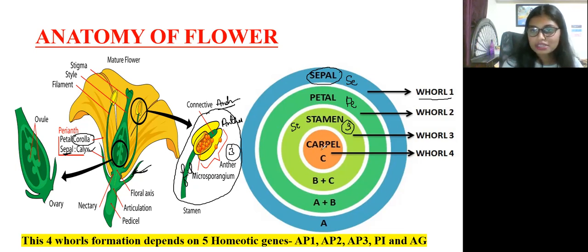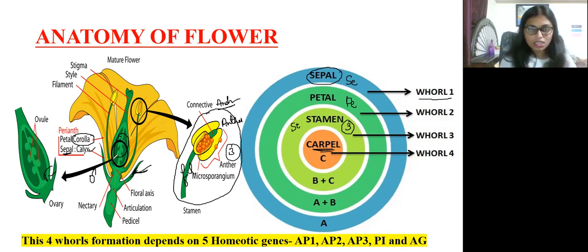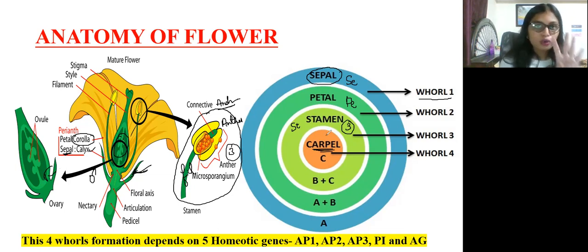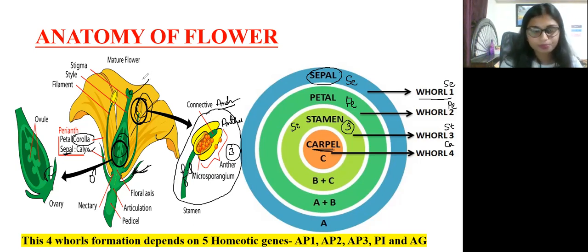The fourth whorl is the carpel, which contains the ovary — the female reproductive organ in the flower. So in this ABC model, the first whorl is sepal, the second is petal, the third is stamen, and the fourth is carpel. Carpel contains the ovary.